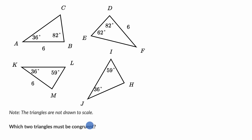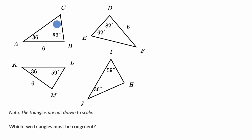Now let's work through this together. For almost every one of these, they've given us two angles and a side. Triangle IJH is the exception — they've only given us two angles. If I know two angles of a triangle, I can figure out the third, because the angles must add up to 180 degrees. Then I can use that information, along with the given side, to judge which triangles are congruent.